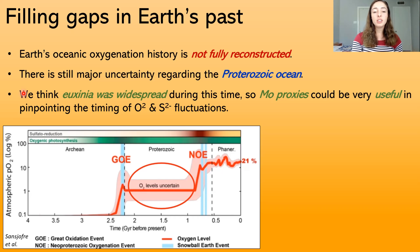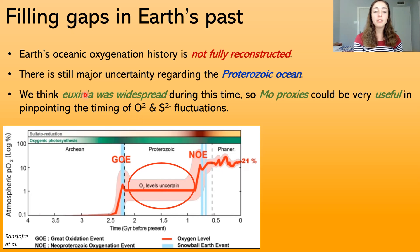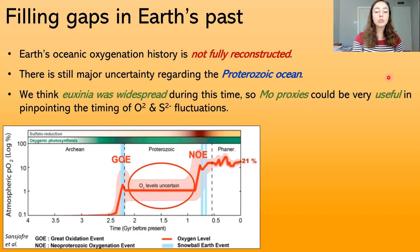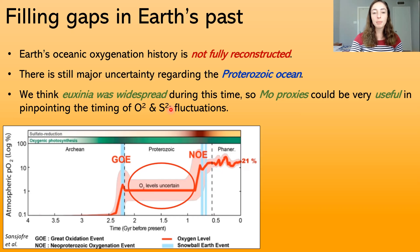A lot of data points to the fact that euxinia — really sulfidic and anoxic environments — may have been widespread during the Proterozoic. Therefore, molybdenum proxies would be perfect for reconstructing the redox conditions in this time frame.